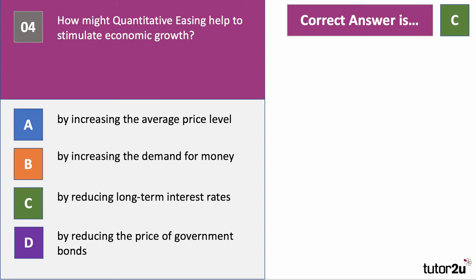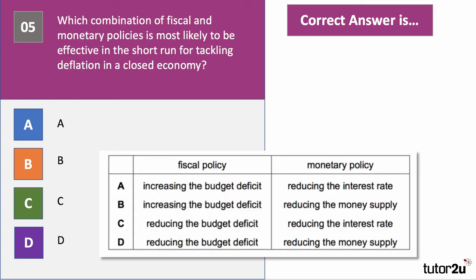The answer to question four is C — by reducing long-term interest rates. Under QE, the central bank typically buys government bonds. This increase in demand causes the price of bonds to go up, which in turn reduces the yield or interest rate on government bonds. Long-term interest rates go down, it's cheaper for governments and corporations to borrow, and money flows out of bonds into stock markets and other forms of investment.